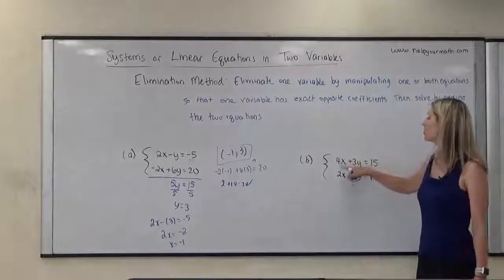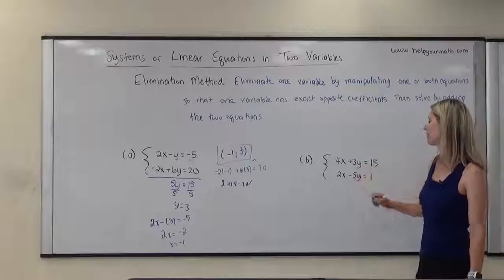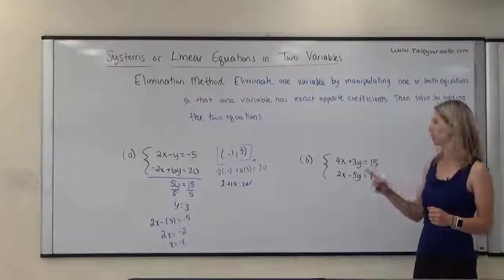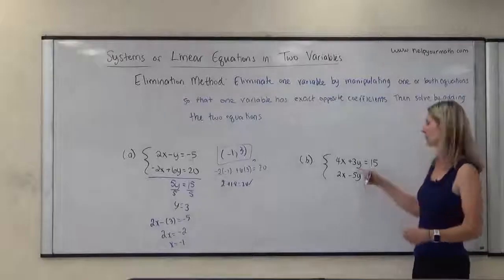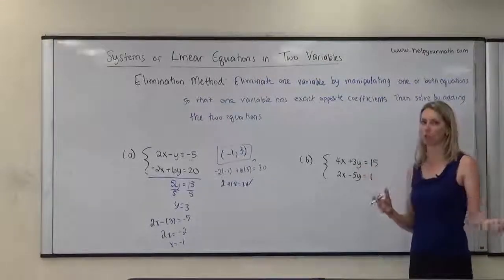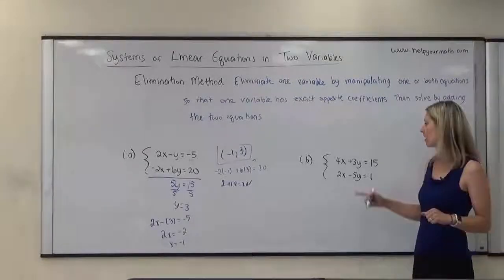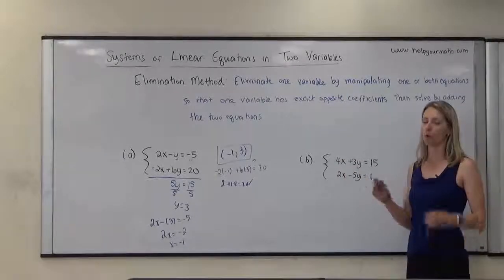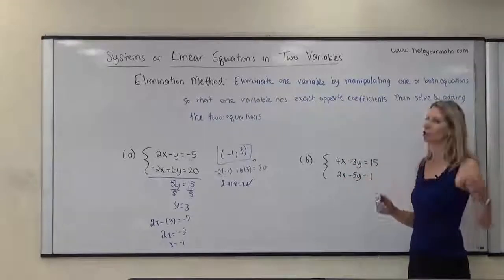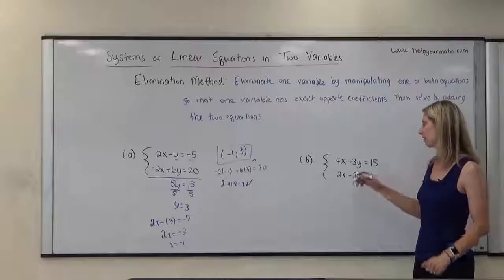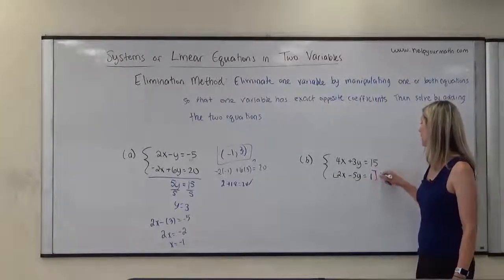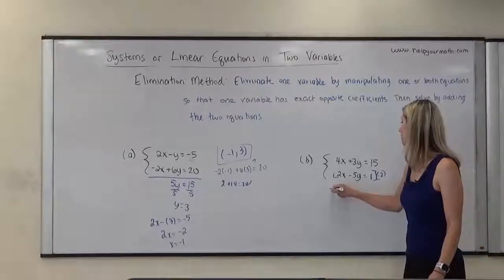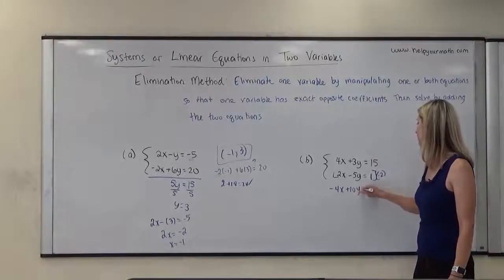In our second example, the coefficients of x are 4 and 2, and the coefficients of y are 3 and negative 5. We want to get one of them to be exact opposite numbers. It might be simpler to get the x coefficients to be exact opposites — I can multiply 2 by negative 2 to give me negative 4. I can't just multiply one single piece of an equation by negative 2; I have to multiply the entire equation by negative 2. So then I would have negative 4x plus 10y is equal to negative 2.